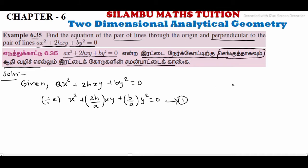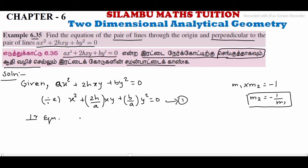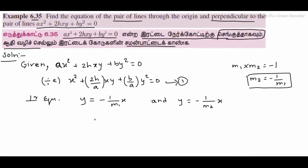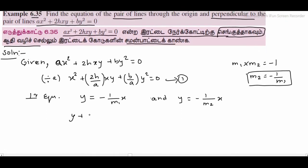We know that m1 into m2 is equal to minus 1, so for the perpendicular equation m2 is equal to minus 1 by m1. Using this concept, the perpendicular equations are y is equal to minus 1 by m1 times x, and y is equal to minus 1 by m2 times x.